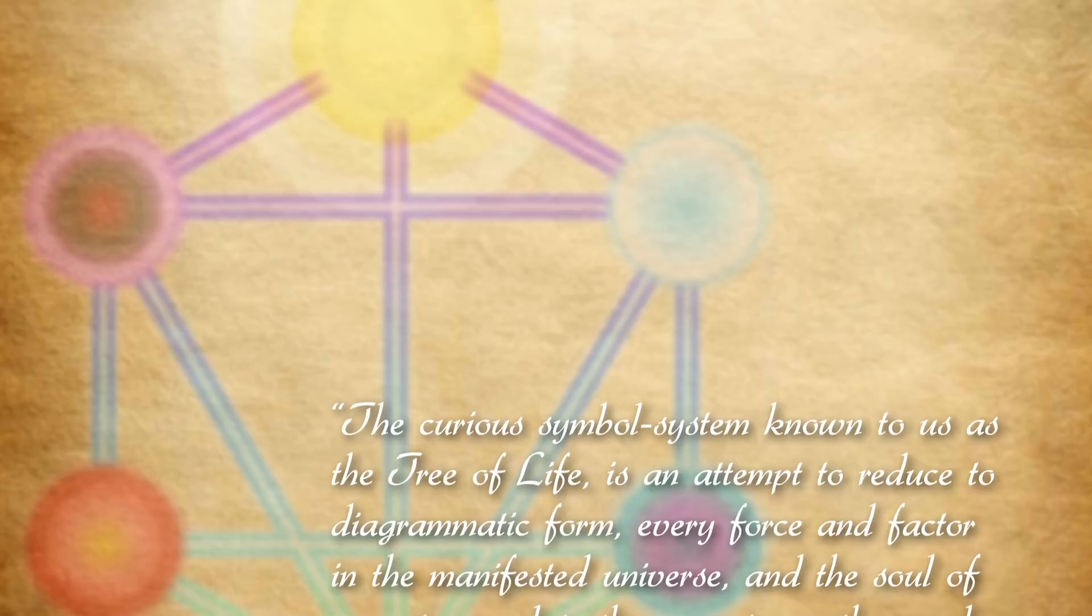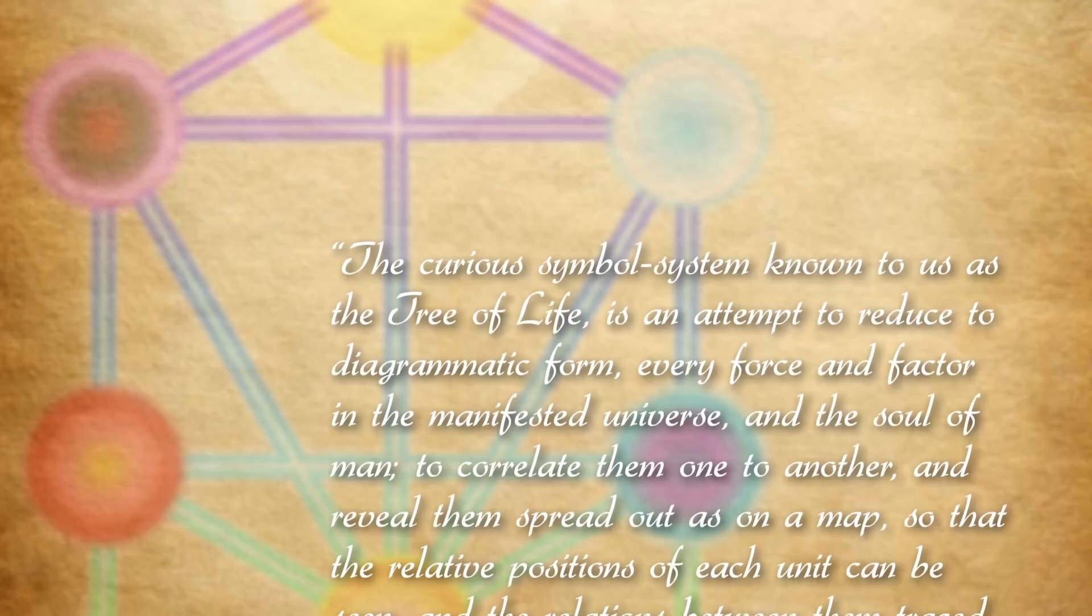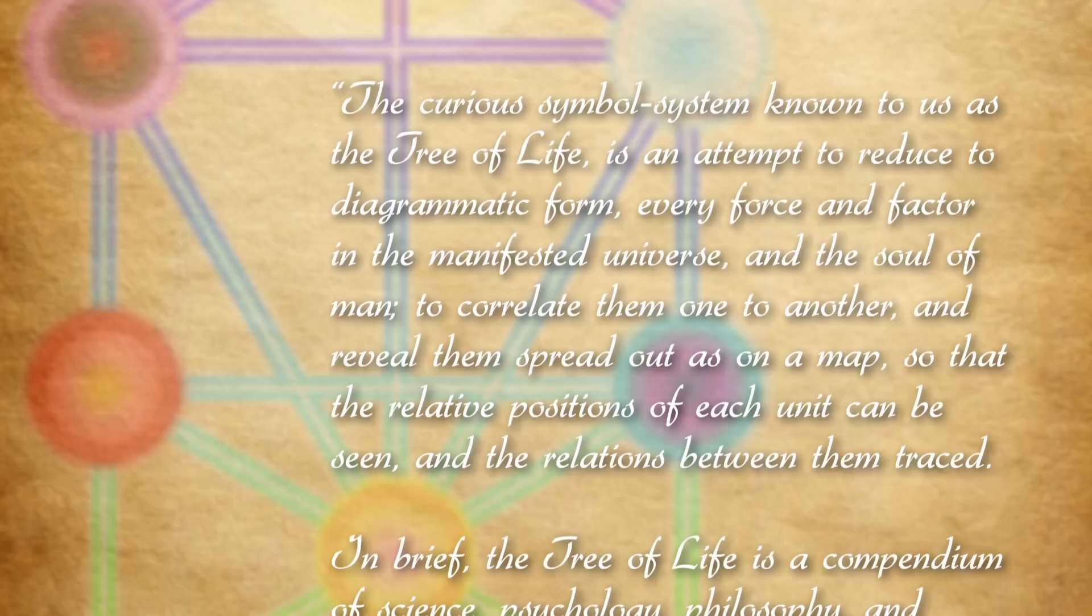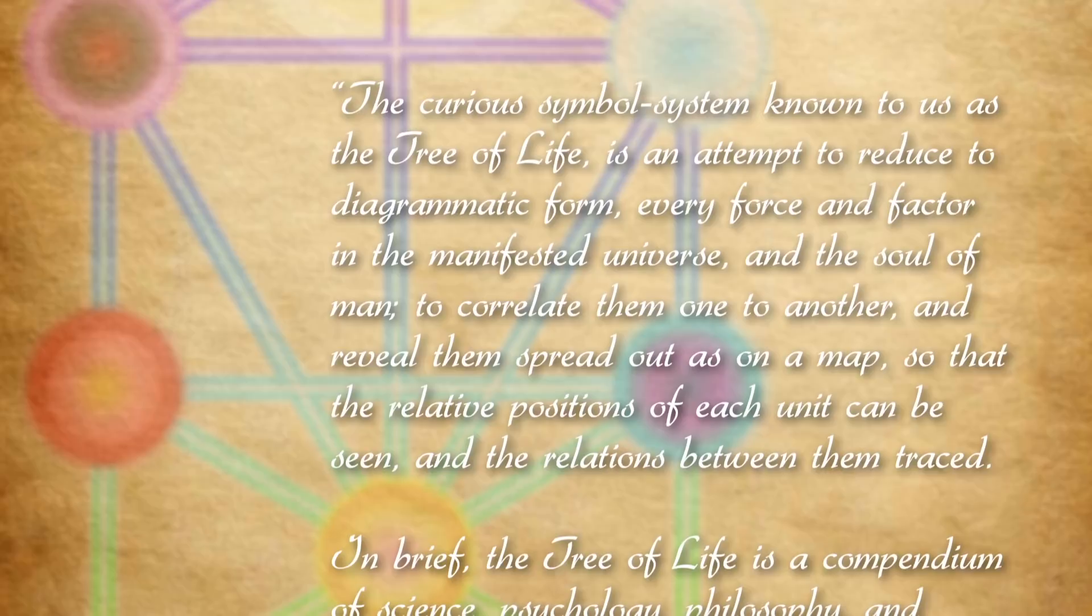In the words of Dion Fortune, the curious symbol system known to us as the Tree of Life is an attempt to reduce to diagrammatic form every force and factor in the manifested universe and the soul of man, to correlate them one to another and reveal them spread out as on a map so that the relative positions of each unit can be seen and the relations between them traced.